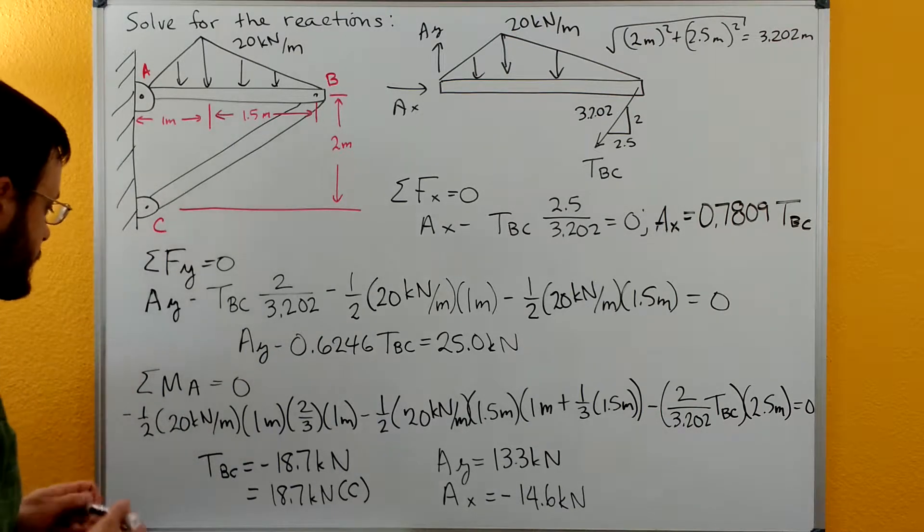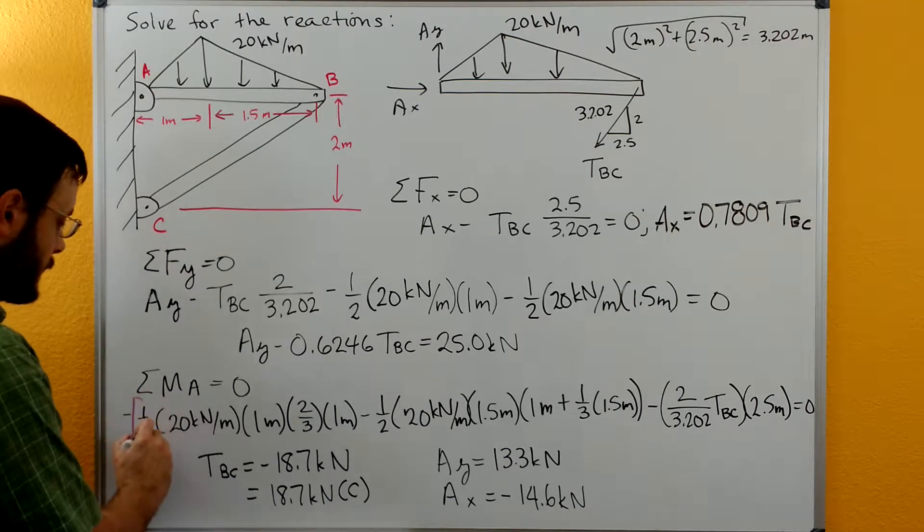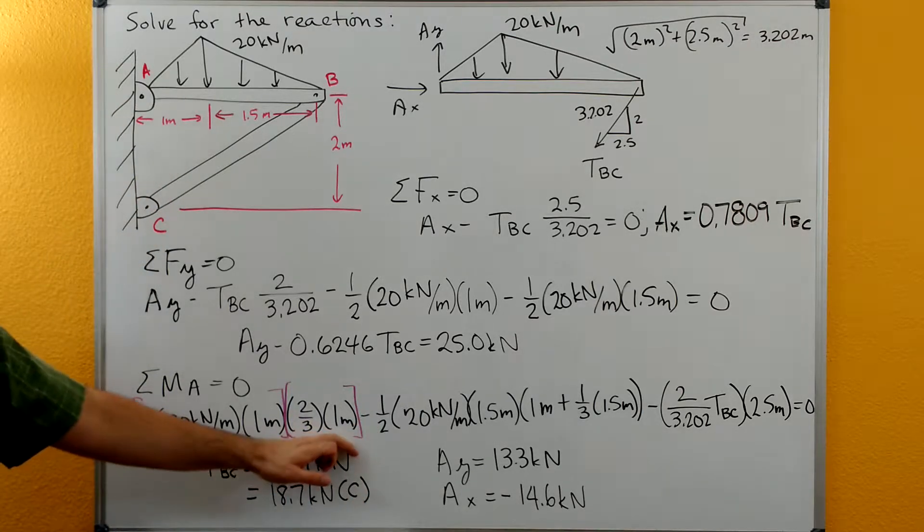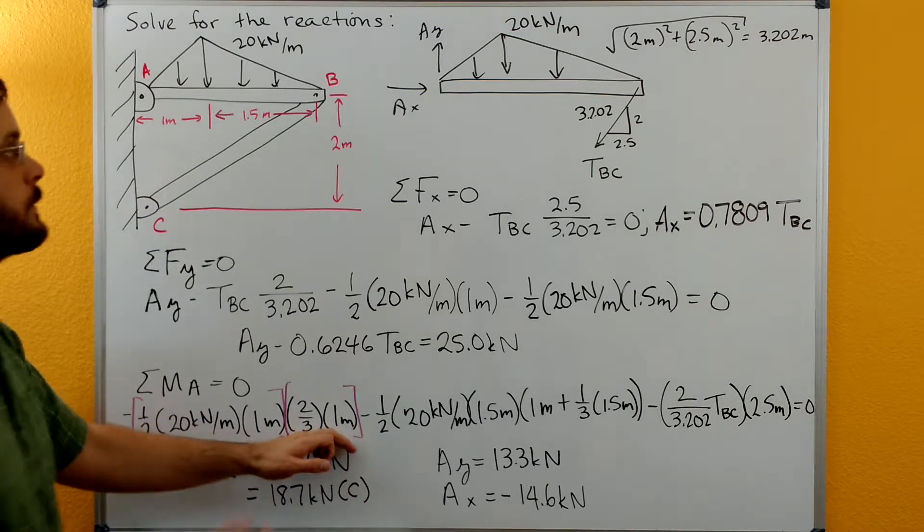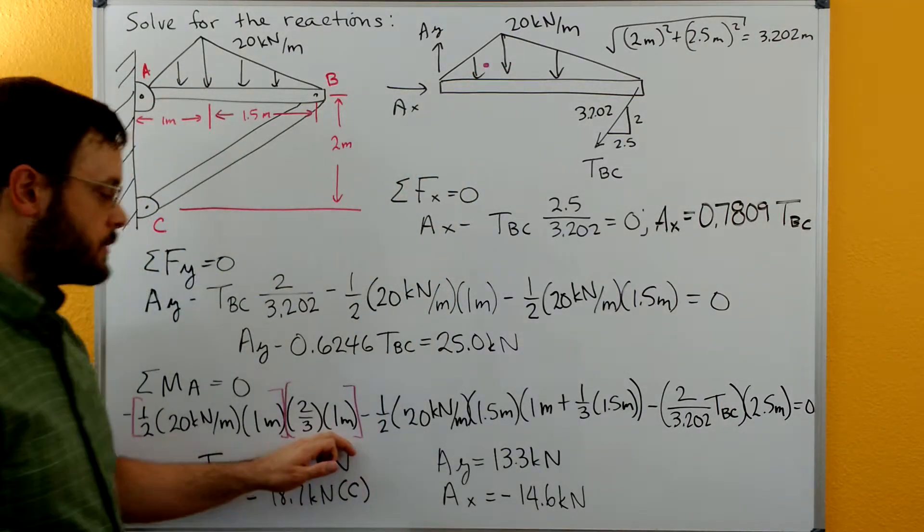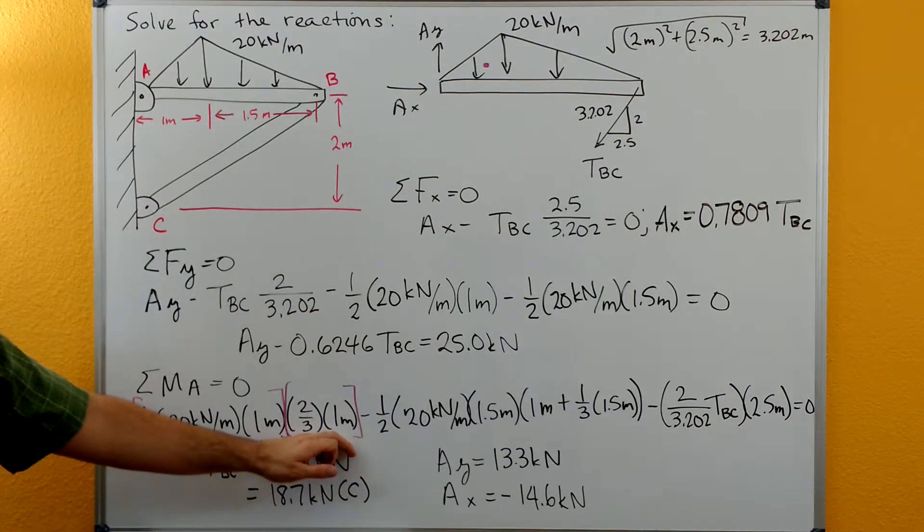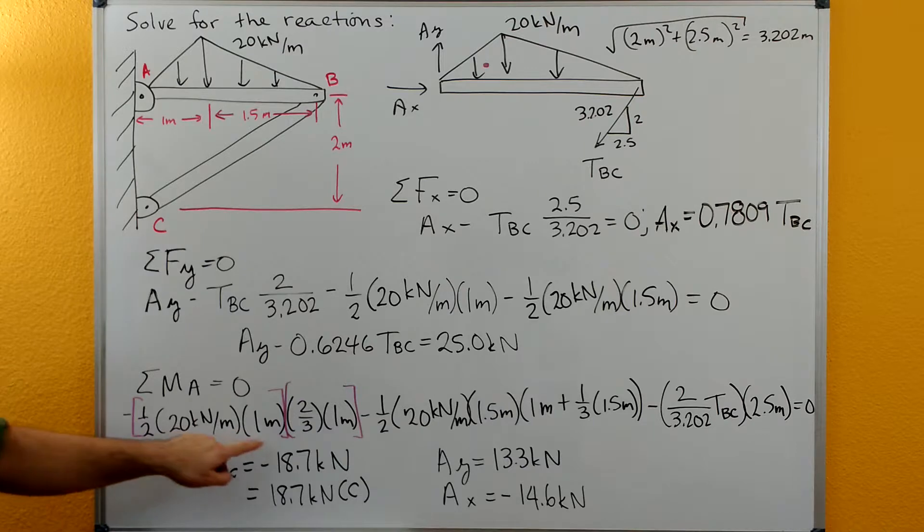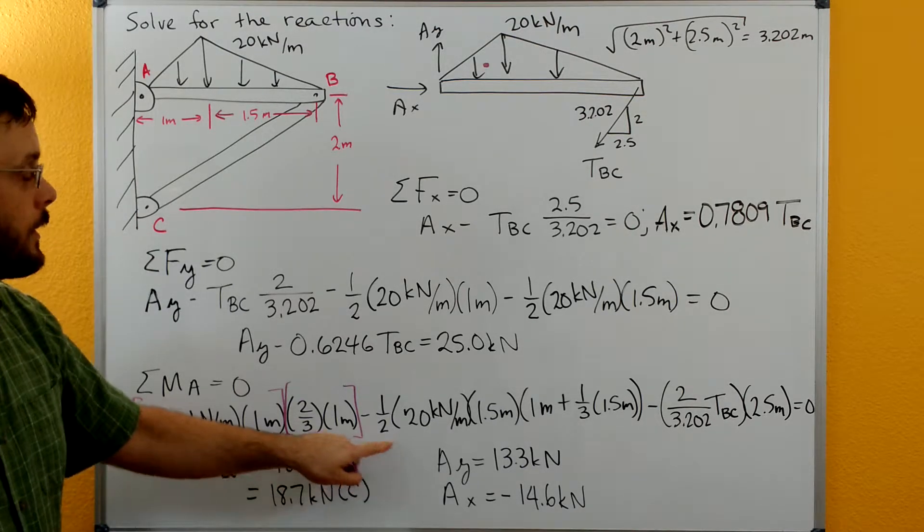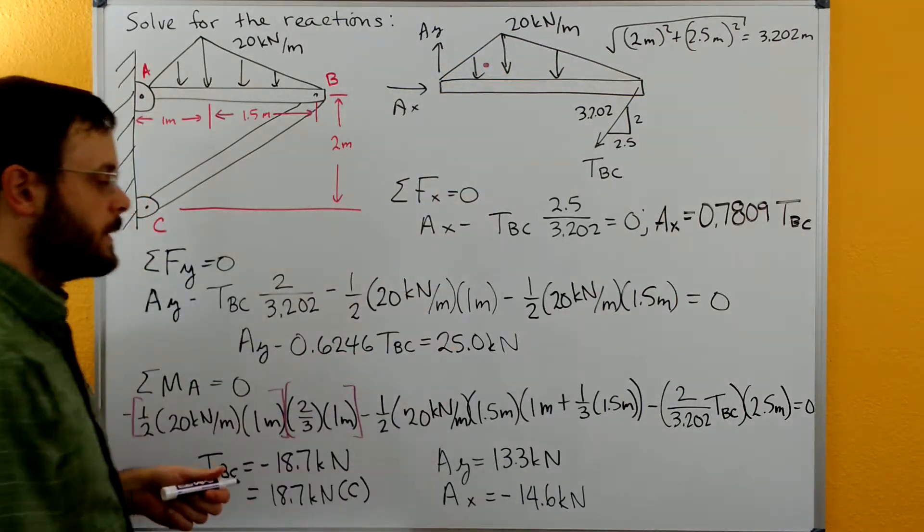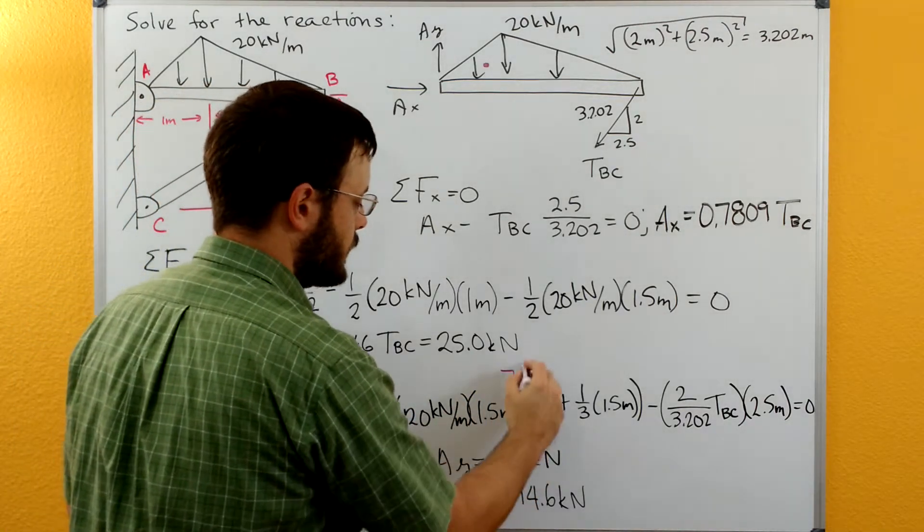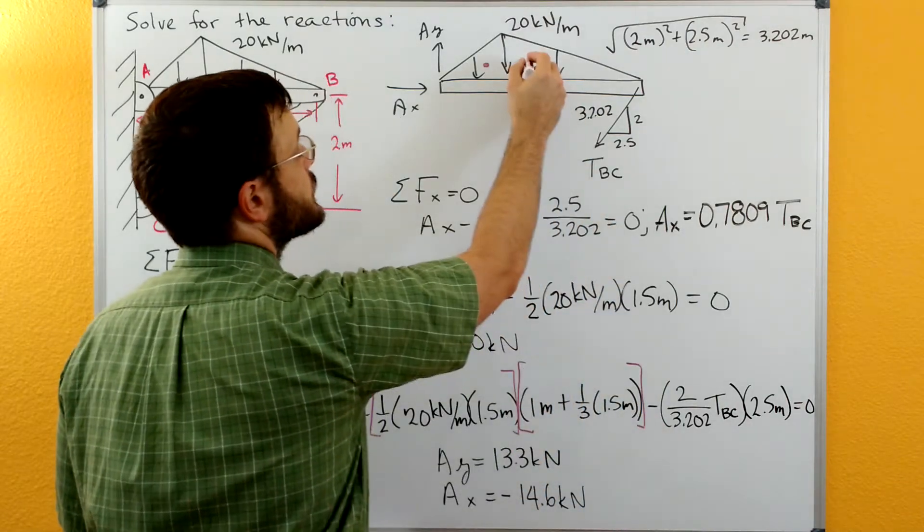Here are our distributed loads. Remember with the distributed load you have the distance portion. So this is your distance portion, two-thirds times one meter to get here to the centroid location for the first distributed load, and then we have to multiply that by the force. The force is going to be this one-half distributed load times the base of the distributed load. And this distributed load gives us a negative moment about A. Here's our next distributed load.